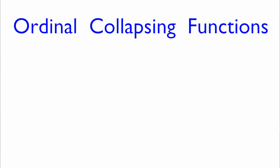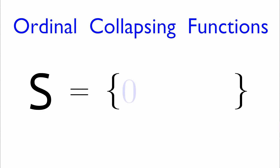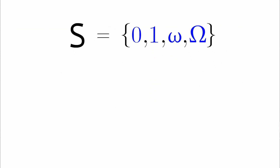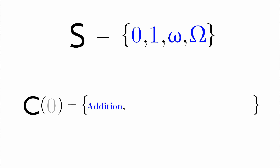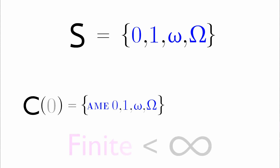In this video, we're going to be talking about ordinal collapsing functions. Let's have the set S. This contains the elements 0, 1, omega, and capital omega. And then we have the set C0. This contains addition, multiplication, and exponentiation — I'll call that AME for short. We do AME to the elements of set S, but we can only do it a finite number of times.